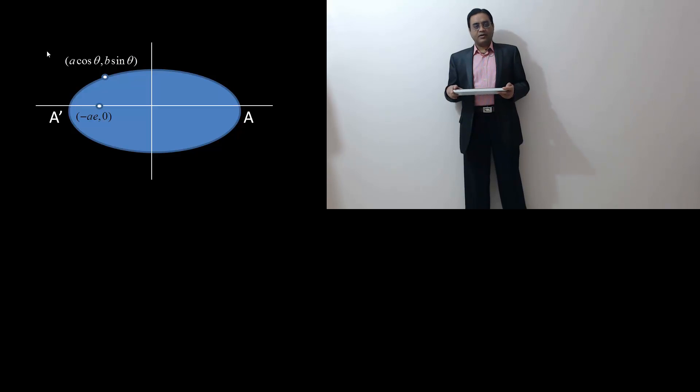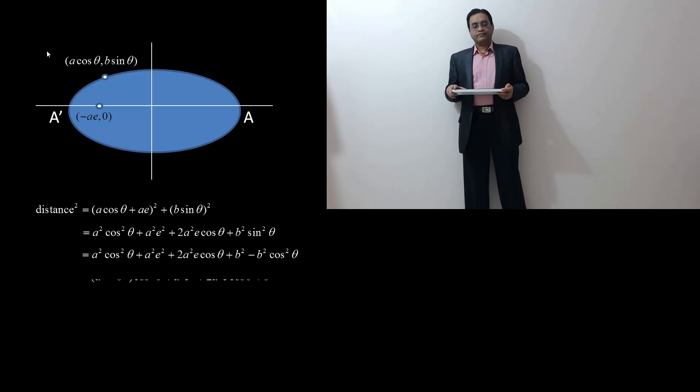The distance of this point from the focus squared is given by this. On simplifying and making use of b² = a²(1 - e²),